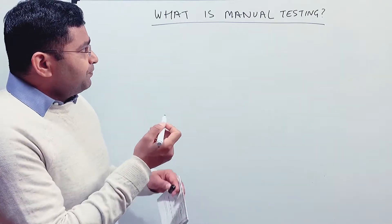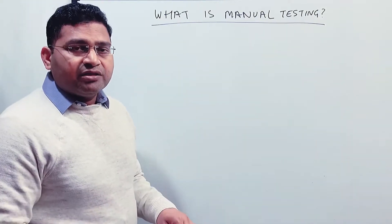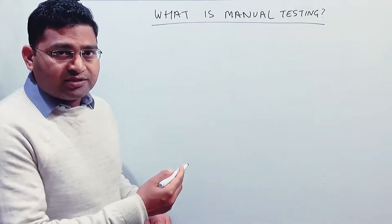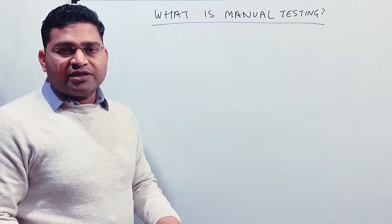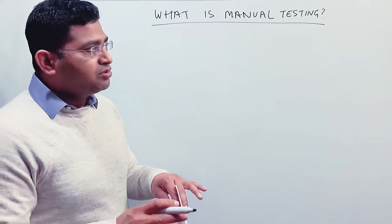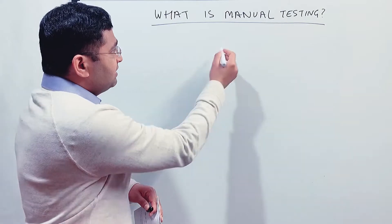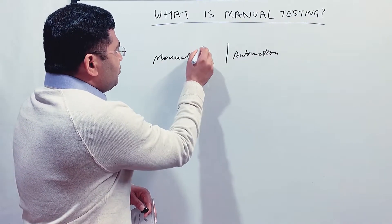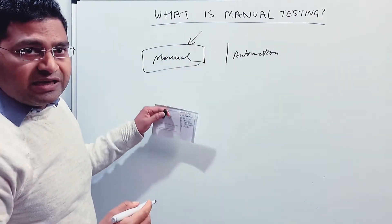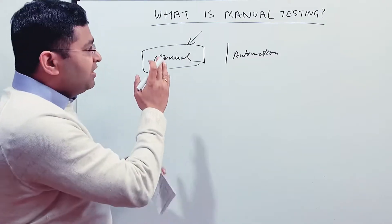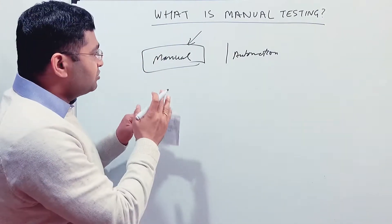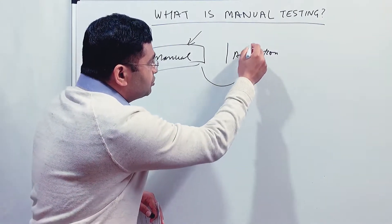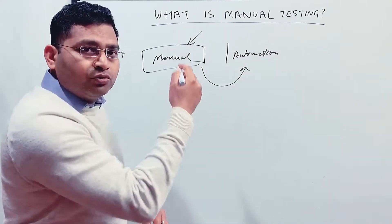Coming back to manual testing — when you are starting any application testing or any software that you are trying to test, the first and foremost type of testing you'll do is manual testing. The broader categorization of testing is: one type is manual testing, and the second one is automation. Manual testing is the first category you will target. You do the manual testing first, ensure the test cases pass properly and there are no outstanding defects, then you go to the second category and use tools, scripts, or programming language to automate those test cases.